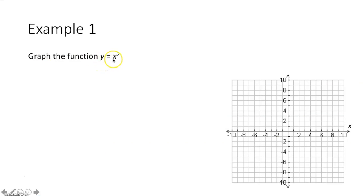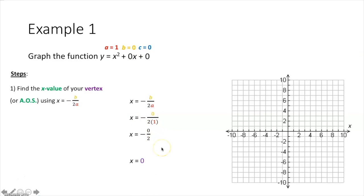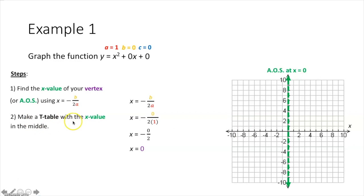Example one: graph the function y equals x squared. This is technically y equals x squared plus 0x plus 0, where a is 1, b is 0, and c is 0. Using x equals negative b over 2a, we plug in 0 for b and 1 for a, and simplify to get x equals 0. So the axis of symmetry is at x equals 0 — we draw a vertical line there.